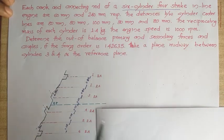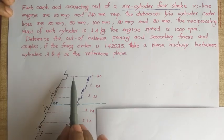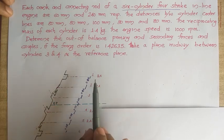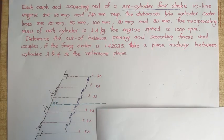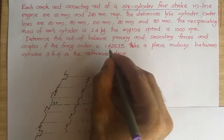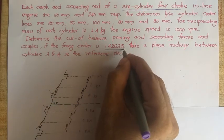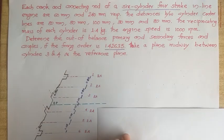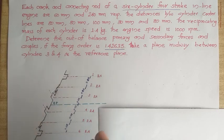The 6-cylinder engine can be seen as having each cylinder with the same reciprocating mass, the same crank radius, and a given firing order. We have to check whether there is any out-of-balance primary force, primary couple, secondary force, or secondary couple.